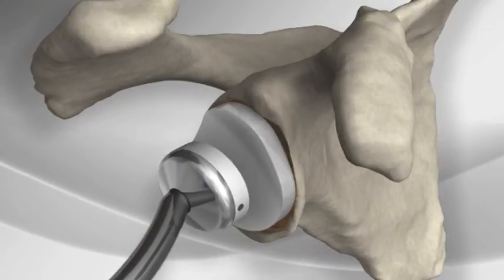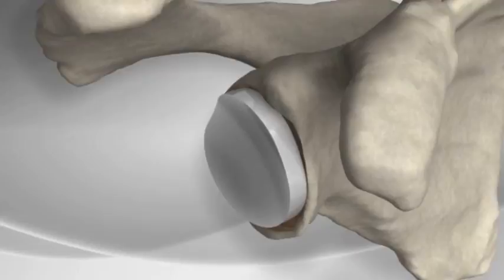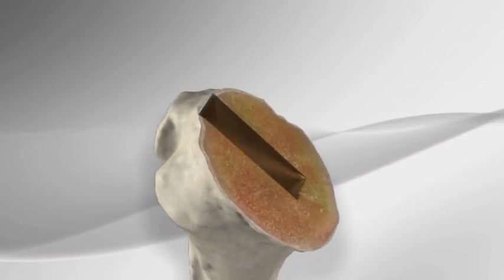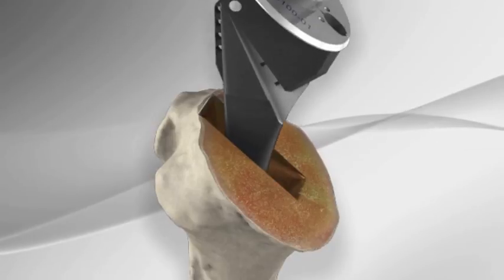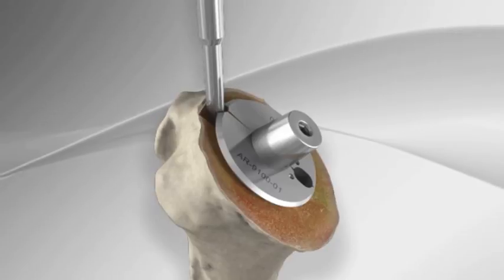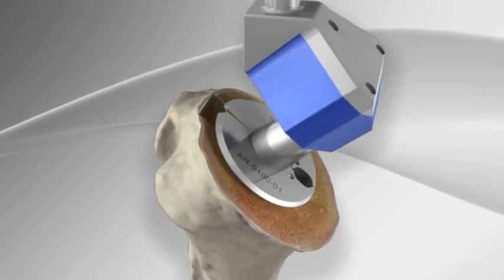Once the cement has dried, attention is turned back to the humerus and the trial prosthesis is removed. The final prosthesis is impacted into the humeral shaft. It can also be cemented if necessary.